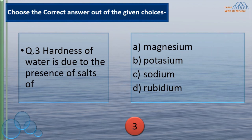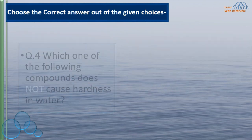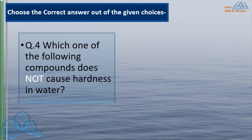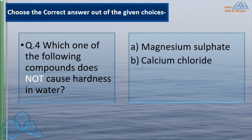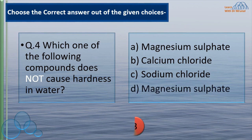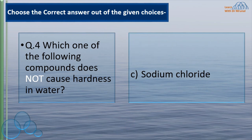We know that hardness of water is due to the presence of salts of calcium and magnesium. Which one of the following compounds does not cause hardness in water? Magnesium sulphate, calcium chloride, sodium chloride, magnesium sulphate. All are salts of calcium and magnesium except sodium chloride. So the correct option is C — sodium chloride does not cause hardness in water.